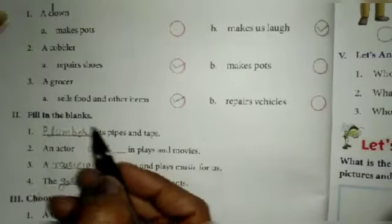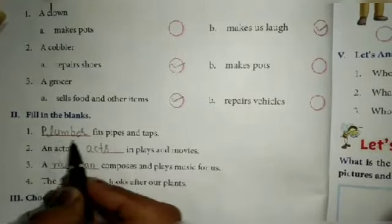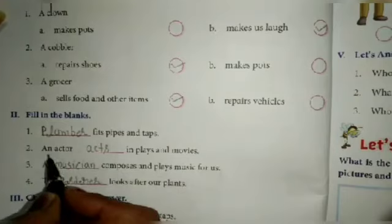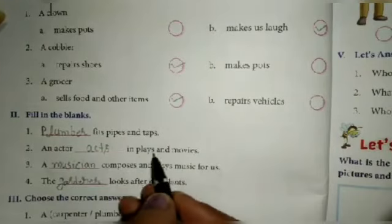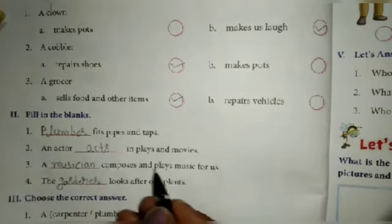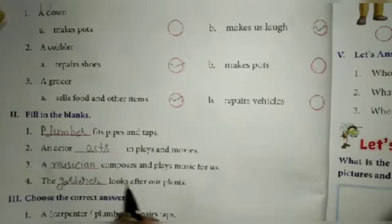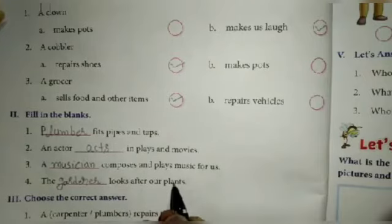Next is filling the blanks. Plumber fits pipes and taps. An actor acts in plays and movies. A magician composes and plays music for us. The gardener looks after our plants.